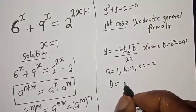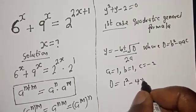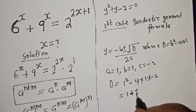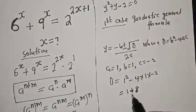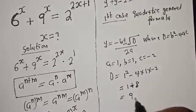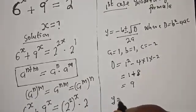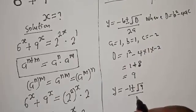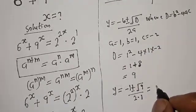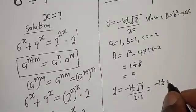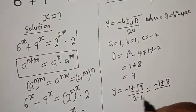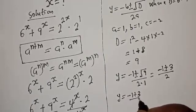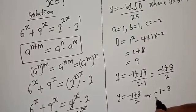Then d equals 1 squared minus 4 times 1 times negative 2. This equals 1 plus 8, which is 9. Then y equals negative 1 plus or minus square root of 9 over 2 times 1, which is negative 1 plus or minus 3 over 2.